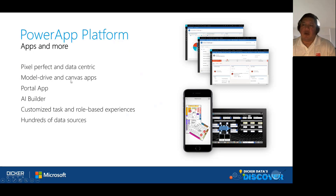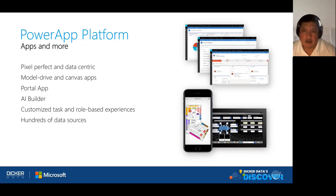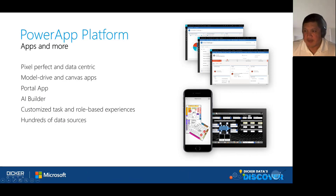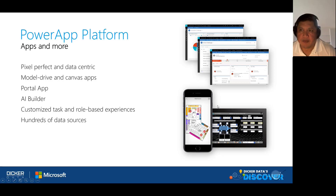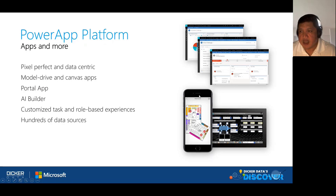With Power Apps, you can develop apps utilizing the native functionality of devices — the camera, accelerometer, and GPS tracking on mobile devices — and create bespoke applications around those capabilities. There are two types of apps: Canvas apps, a custom app you develop from start to finish; and model-driven apps, which are data-driven utilizing the data platform on the Power Platform called Dataverse. There's also a portal app capability for developing bespoke portals and custom websites.